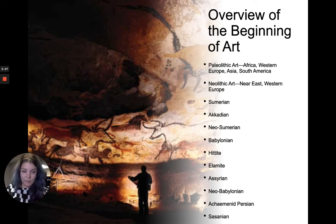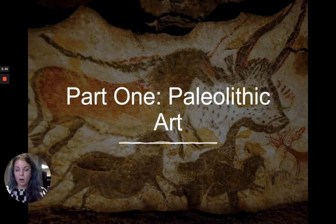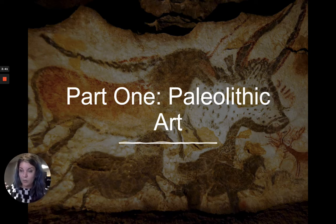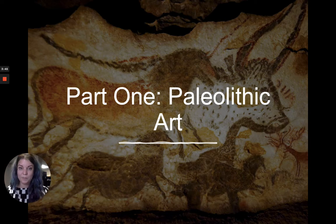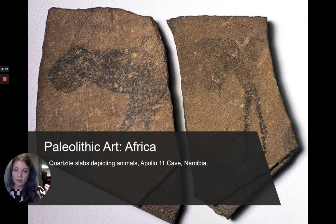Part one: Paleolithic art. Let's look at what this word means. Another name for this period is the Stone Age — Paleolithic, 'lithic' meaning stone. So first we're going to start with Paleolithic art in Africa.